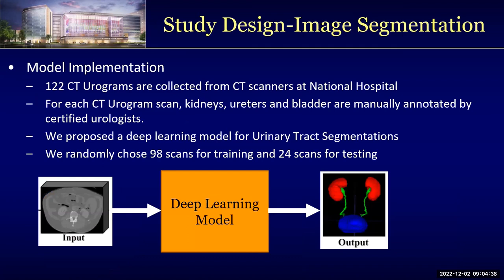Here is our study design. We designed an image segmentation deep learning model and utilized 122 CT urograms collected from CT scanners at National Hospital. For each CT urogram scan, a certified urologist manually labeled the kidneys, ureters, and bladders. Those manual segmentations are used as ground truth to train the deep learning model.